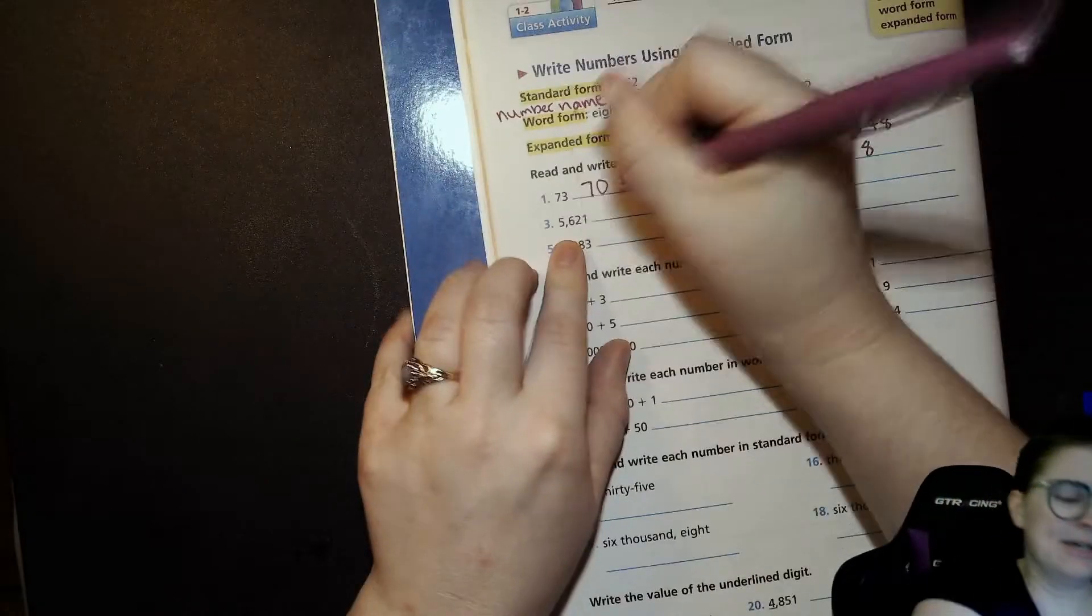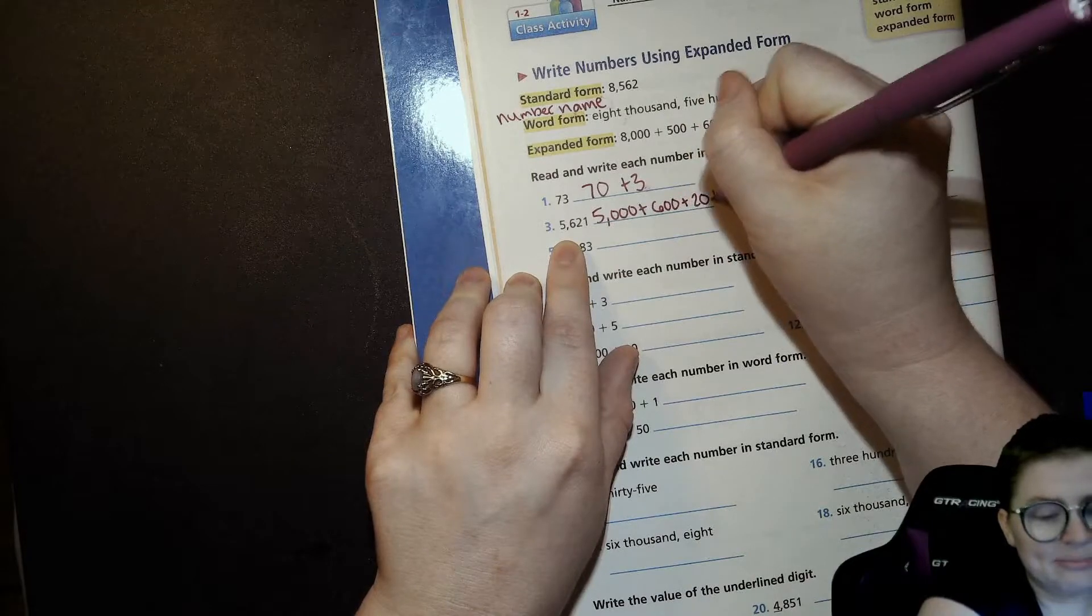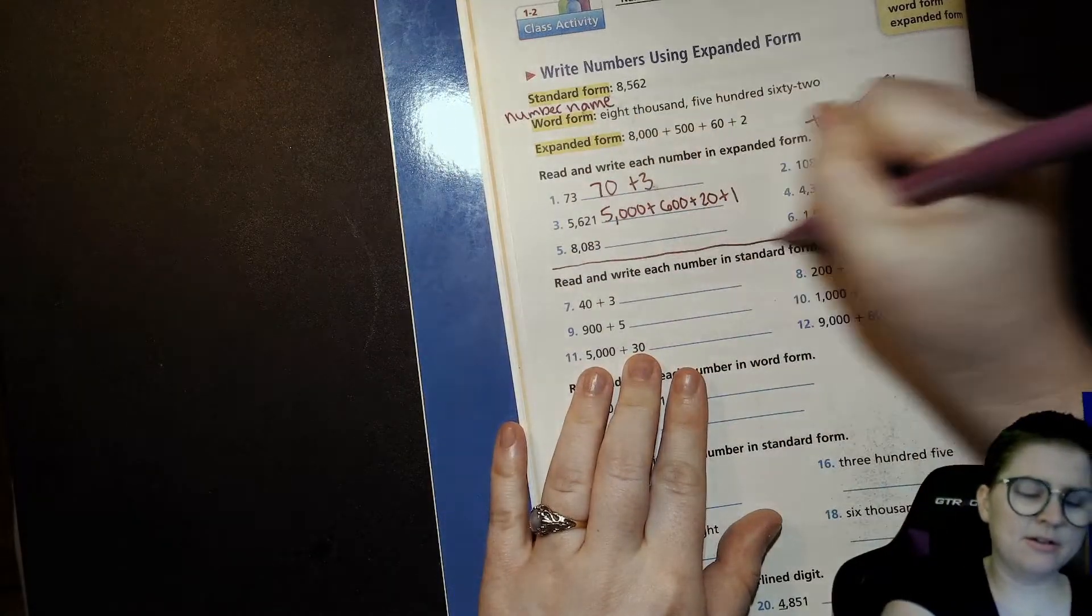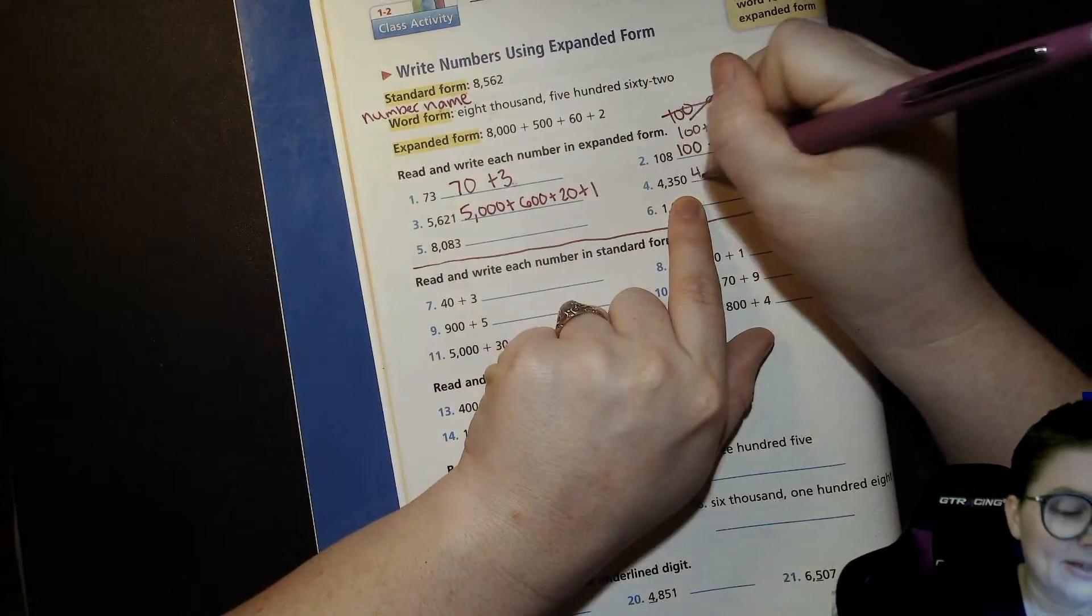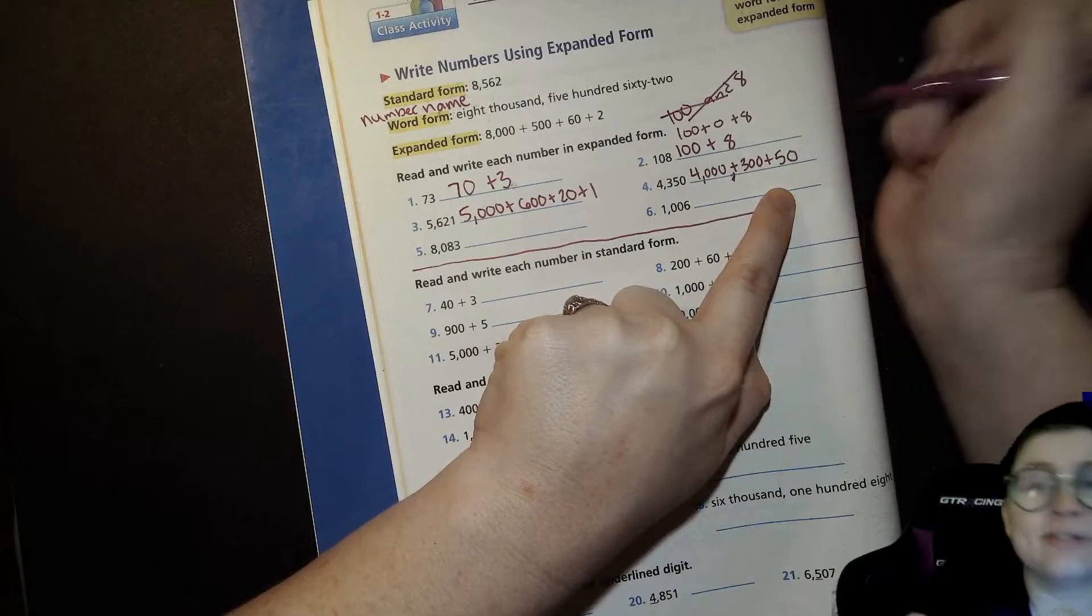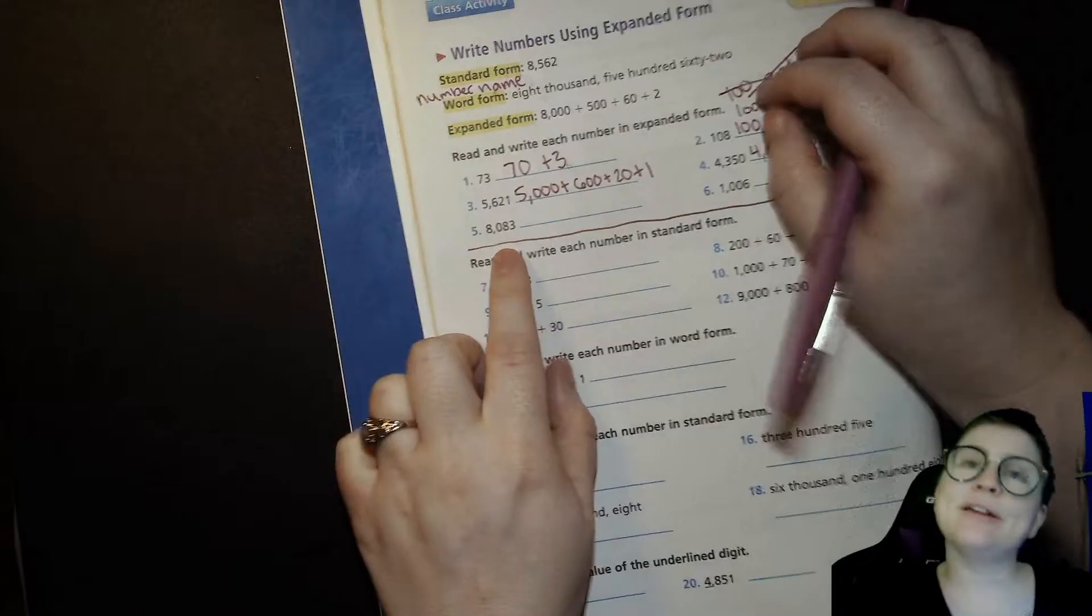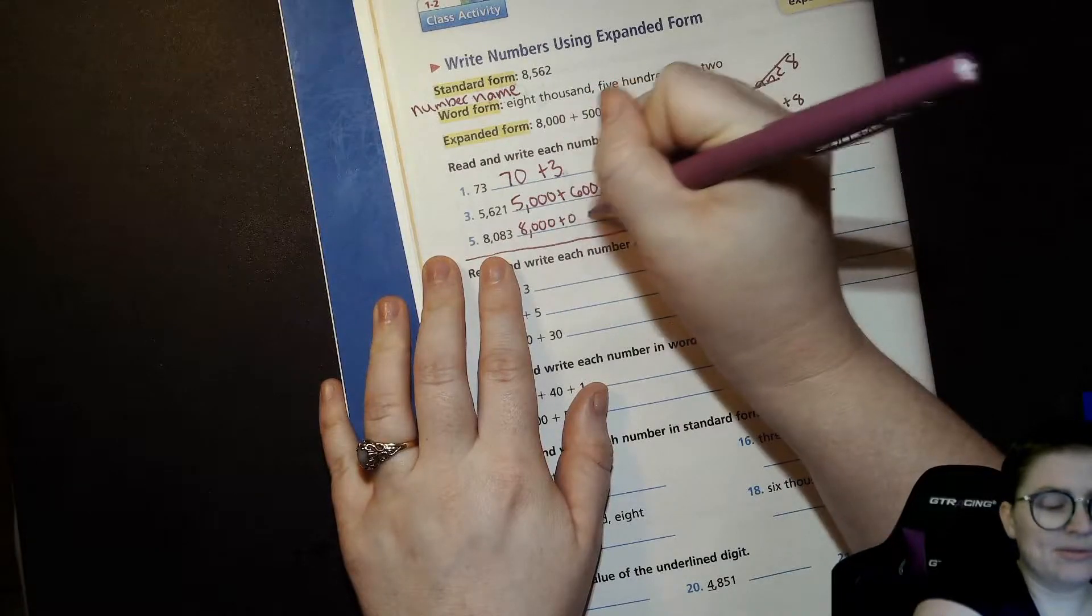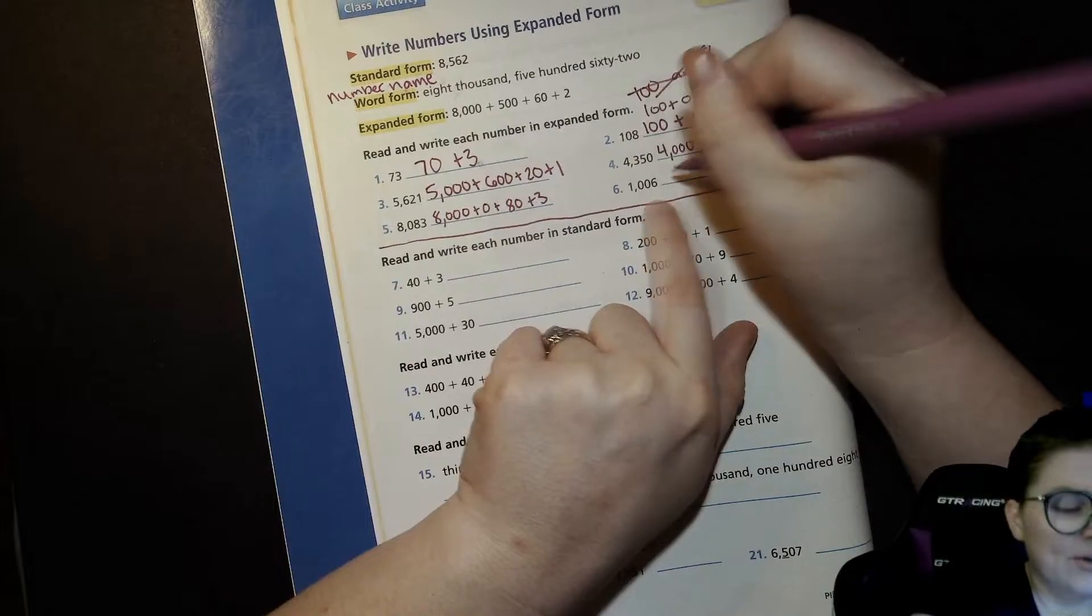Next one we got 5,000 plus 600 plus 20 plus 1. Now if you're feeling pretty good about this, go ahead, pause, do these next three on your own, stop here, and then hit play when you're ready to keep going. If you want to stay with me, that's fine. Here we go. We got 4,000 plus 300 plus 50. And if you wanted to, you could say plus 0. It's like you can if you want or you have to do. Right here we got 8 in the thousands place, so 8,000, 0 hundreds, I'm just going to do plus 0 right there, plus 80 plus 3. Alright, last one on this section: 1,000 plus 0 hundreds plus 0 tens plus 6.